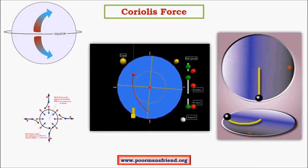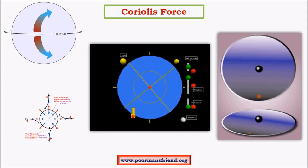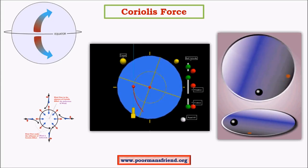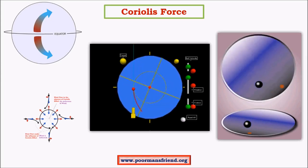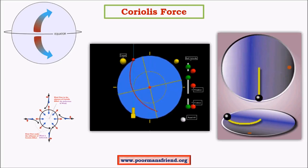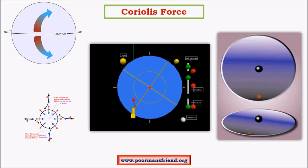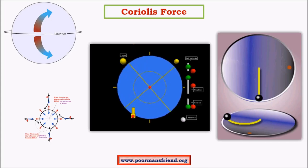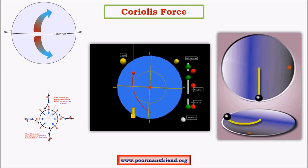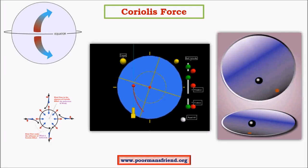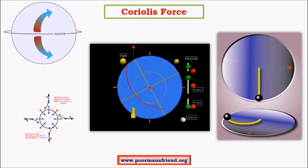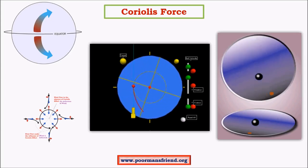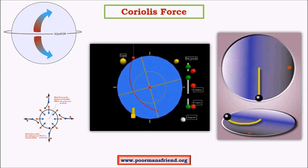Coriolis force is an inertial or apparent force — it appears as if there is a force acting on a body, but in real terms no such force exists. When we say it is an inertial force, the force acting on the body is due to its virtue of motion or inertial position. To understand this, we need Newton's first law: a body stays in its state of motion unless an external force is applied. If a body is at rest it will remain at rest, and if it is moving it will continue moving unless a force acts to accelerate or decelerate it.